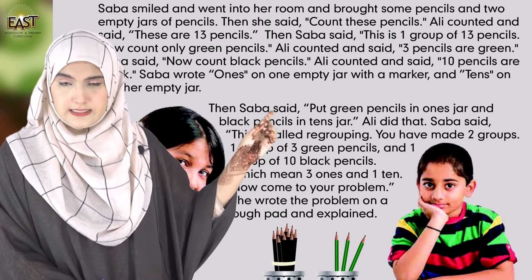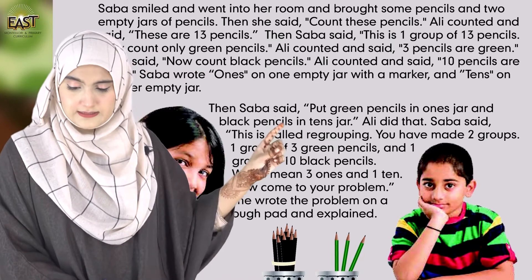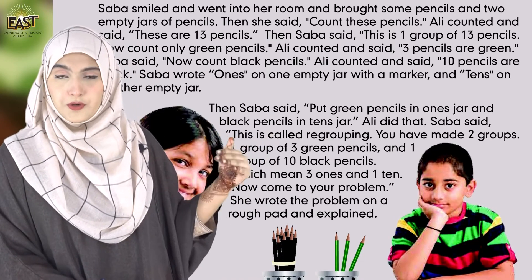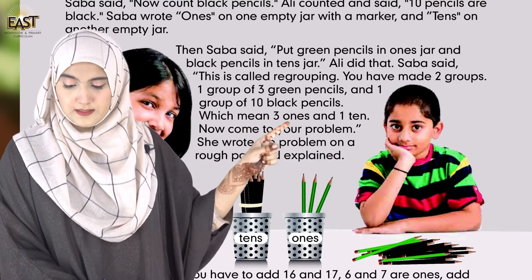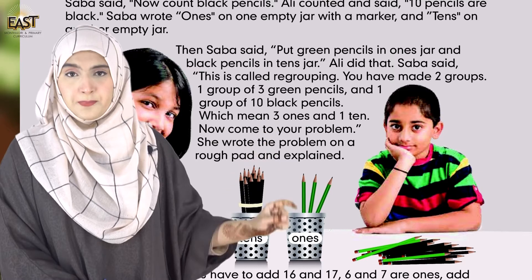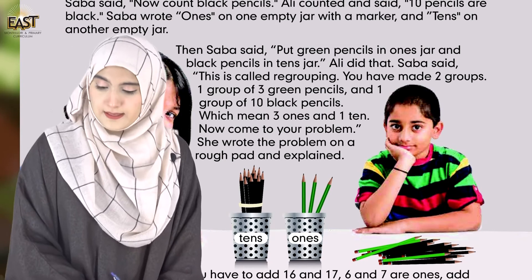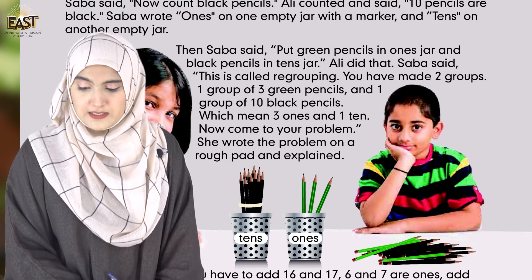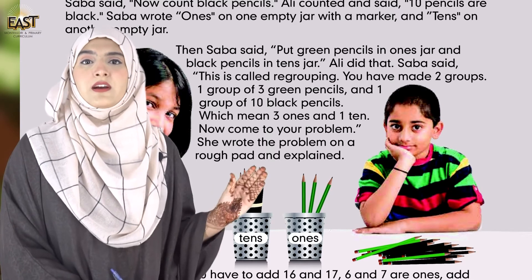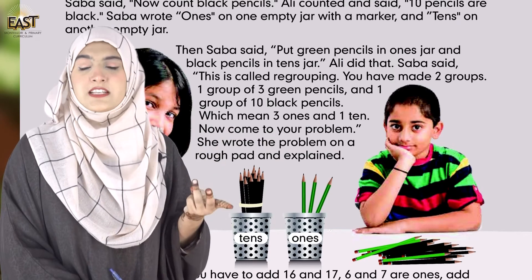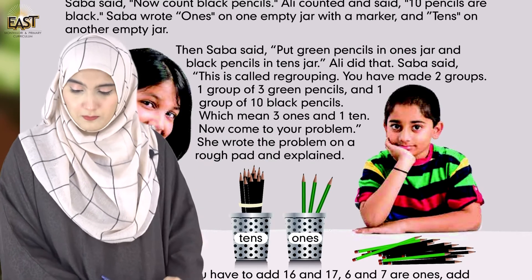Ali نے بالکل وہی کیا جو اس کی بہن نے کہا۔ This is called regrouping — اس کو regrouping کہتے ہیں۔ You have made two groups: one group of 3 green pencils and one group of 10 black pencils۔ Which means three ones and one ten — one کی values ہیں three اور ten کی values ہیں one.